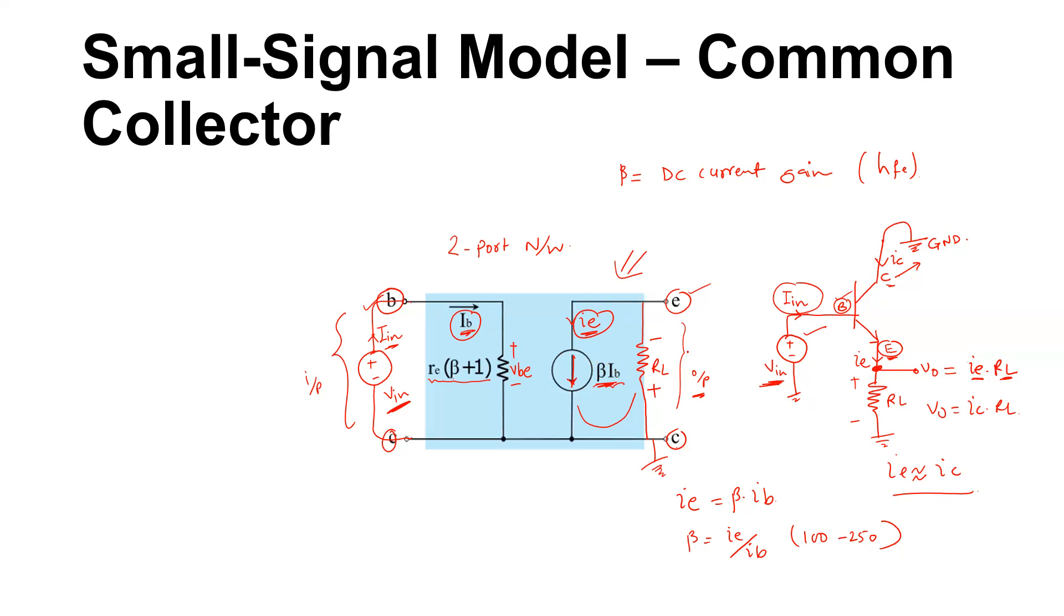If you want to draw the expression for Vo over Vin, what would be for this circuit? You know that there is this Vo which is actually beta times Ib multiplied by RL. And you know that the value of Ib is actually Vbe divided by re times (beta plus one), multiplied by RL.